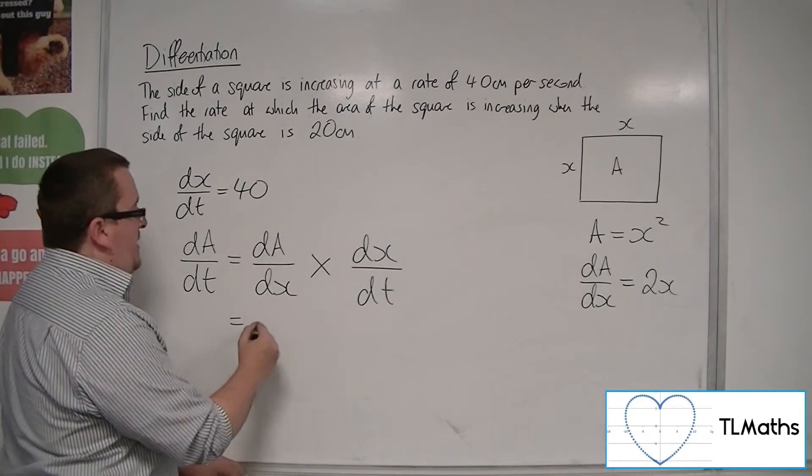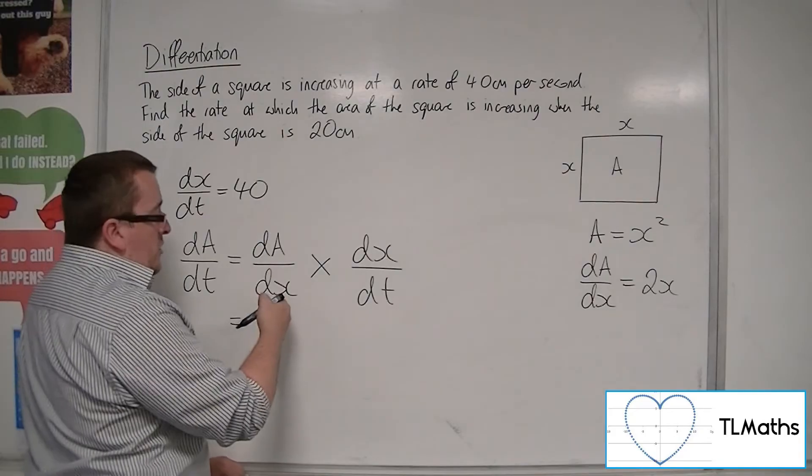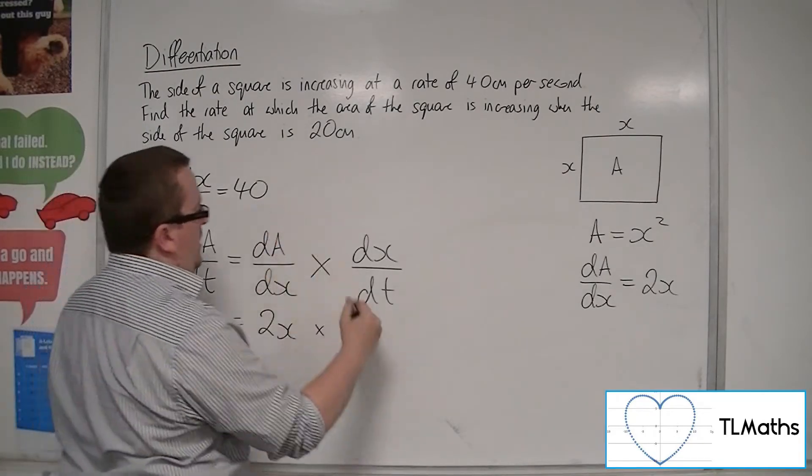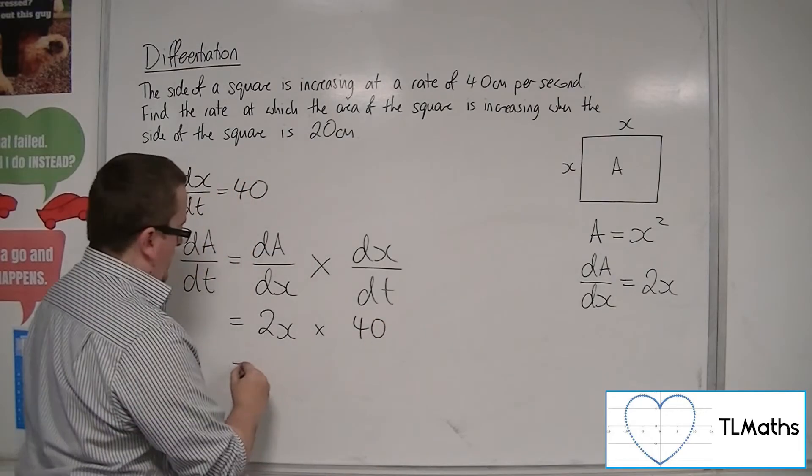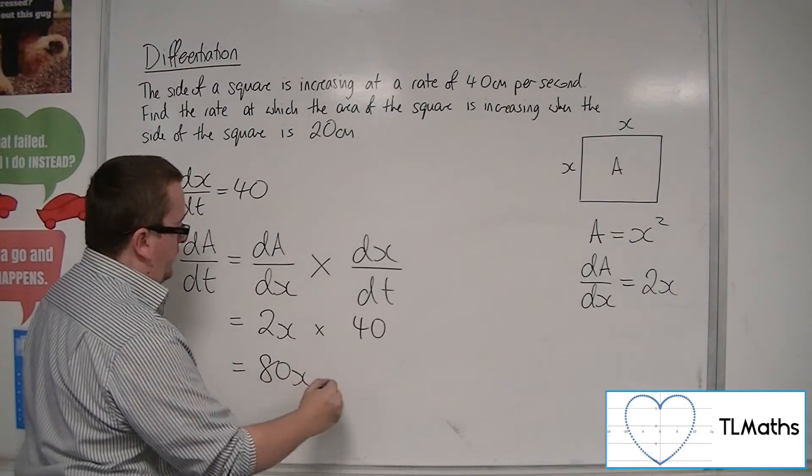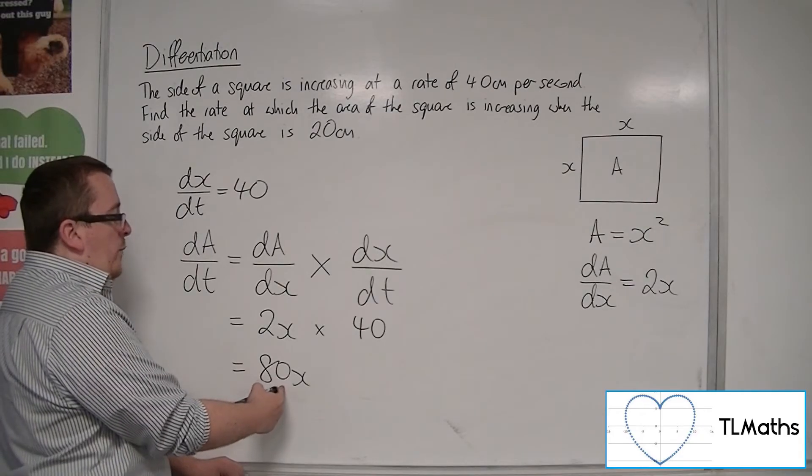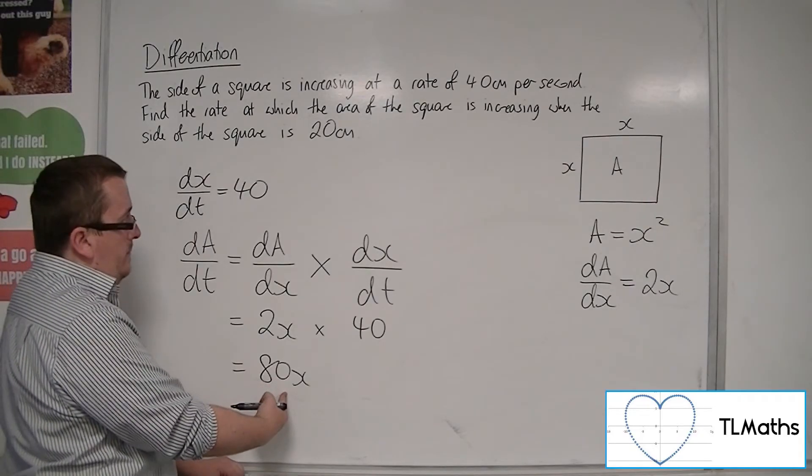So dA/dt will be 2x times dx/dt, which is 40. So that's 80x. So that is the rate at which the area is changing with respect to time.